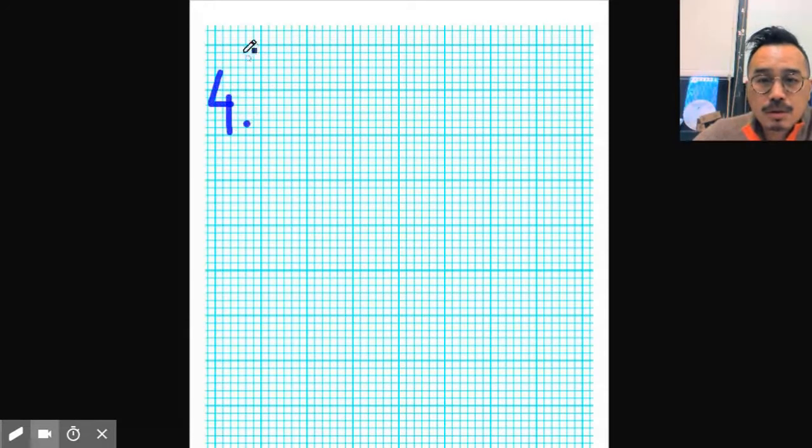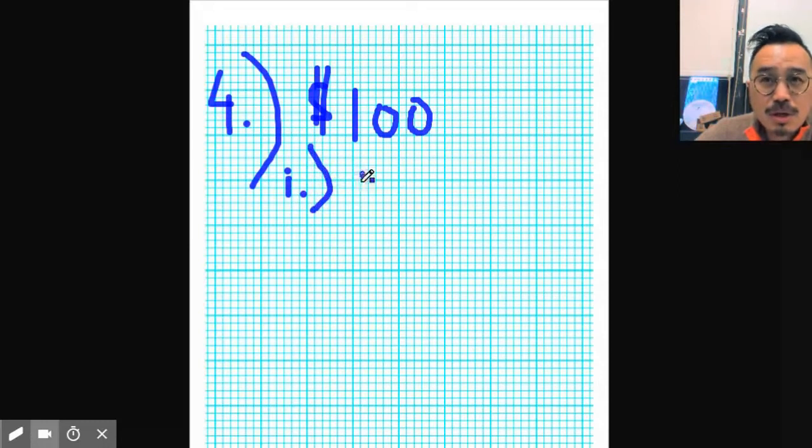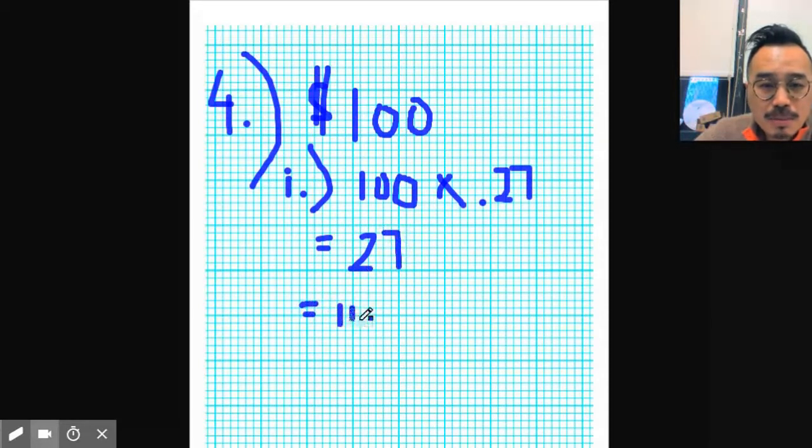This is not hard at all. Okay, 100 bucks, right, 27% discount. Now here's how you do it - there's two ways you could do it. The first way is to do 100 times 0.27, which is 27 dollars, and then you take 100 minus 27.